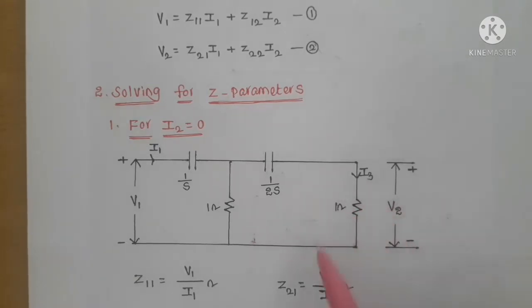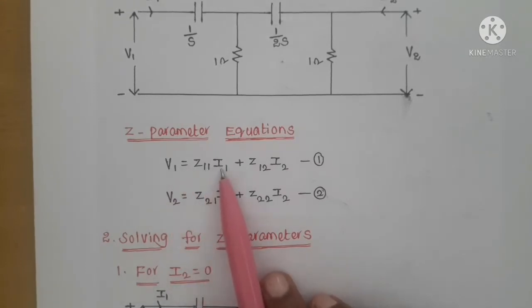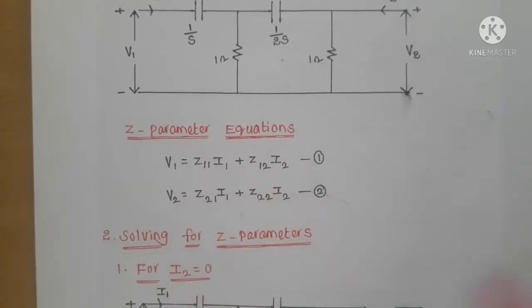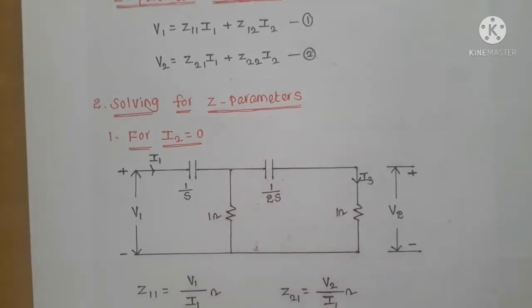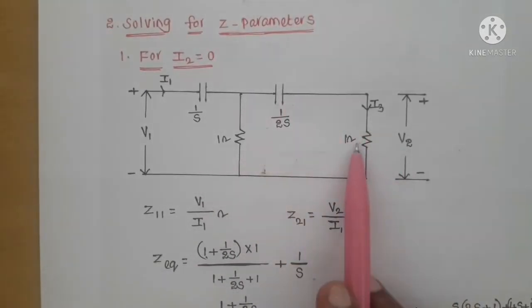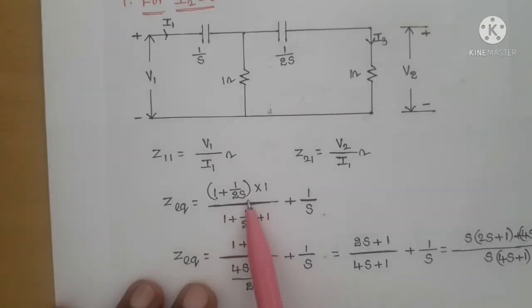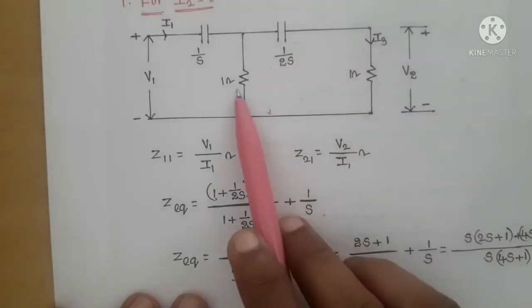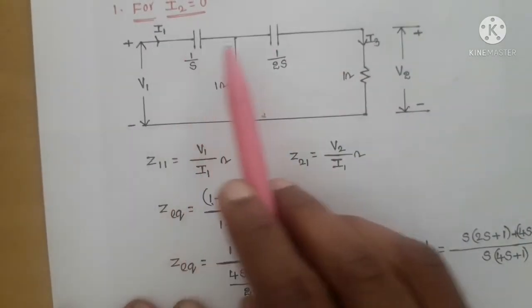To find Z11 = v1/i1, note that 1/(2s) and 1 ohm are in series, giving an impedance of (1 + 1/(2s)). This combination is in parallel with 1 ohm, and the result is in series with 1/s. So Z11 = 1/s + [(1 + 1/(2s)) parallel with 1], which expands as: Z_eq = (1 + 1/(2s))·1 / (1 + 1/(2s) + 1), plus the series 1/s term.